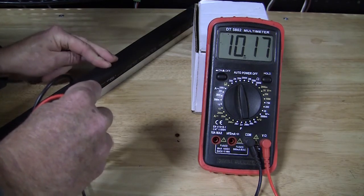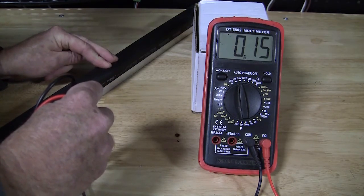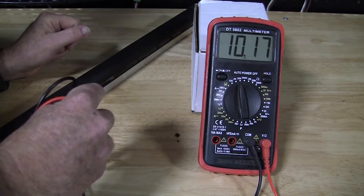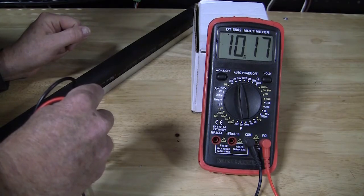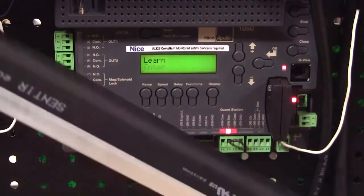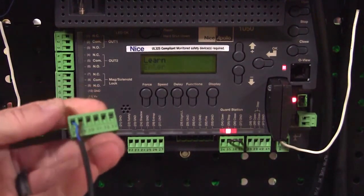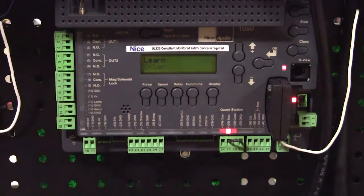It's just a conductive rubber material inside here. When something hits it, the resistance changes. I'm going to show you how we can connect that to a 1050 board as a monitored entrapment device. We've got the two wires of the ASO edge connected to terminals 28 and 29 on the 1050 board, and we're simply going to plug it into the board.